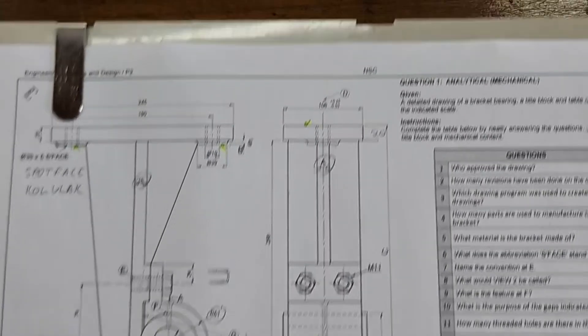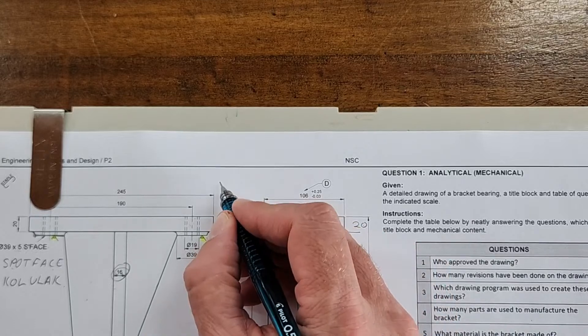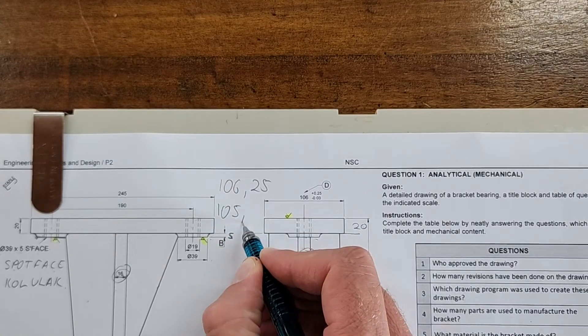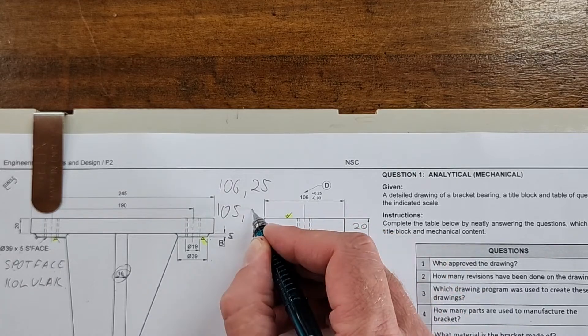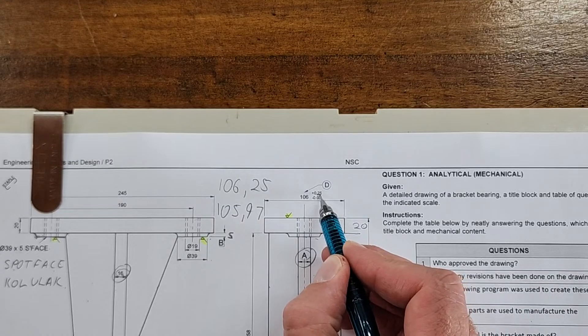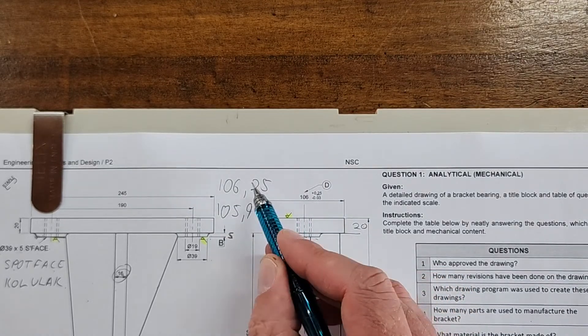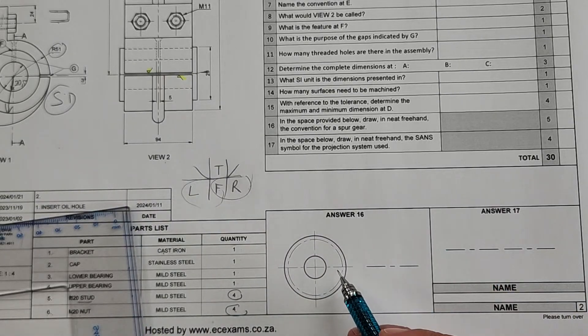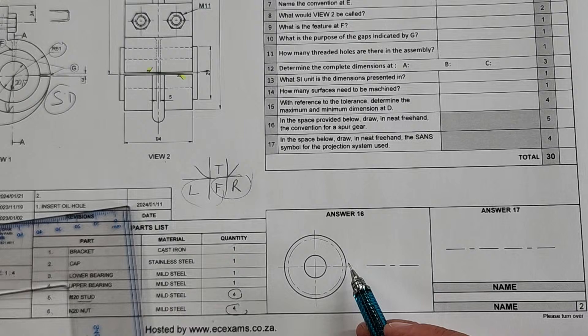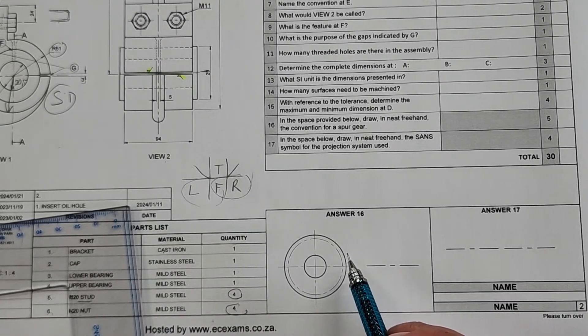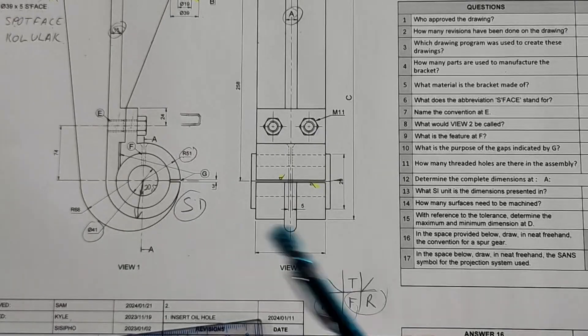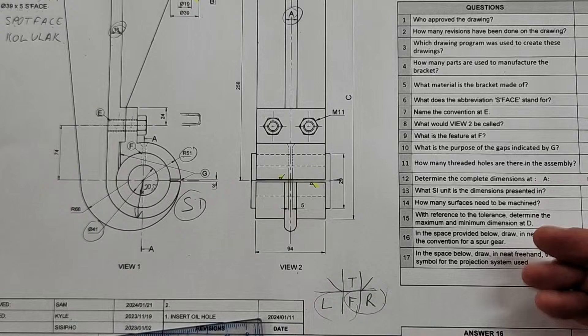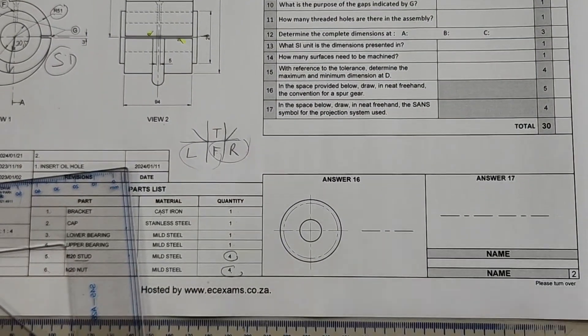Question fourteen: with reference to the tolerance, determine the maximum and minimum dimensions at D. So there we have them here at the top. It says 106 plus 0.25, so it's going to be 106.25, that's going to be our maximum. Our minimum is going to be 105 minus that 0.03, so 105.97. There's our maximum if I add plus 0.25, and if I subtract it, it's going to be 105.97. That's an easy sum for you to do. Question fifteen: what is the unit the dimensions are presented in? In Afrikaans, 'wat is SI eenheid'? All these measurements are presented in millimeters. It's asking standard measurements - it's always going to be in millimeters.